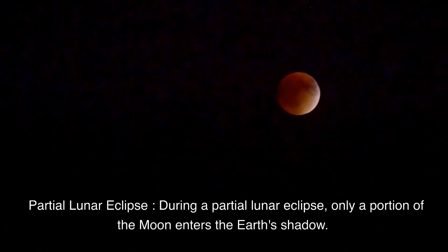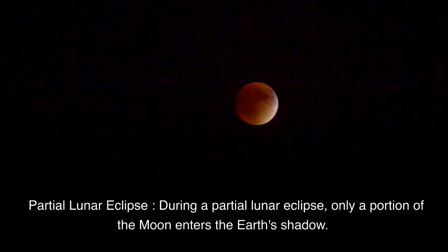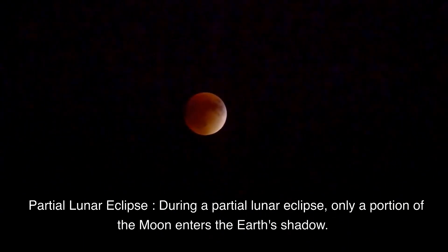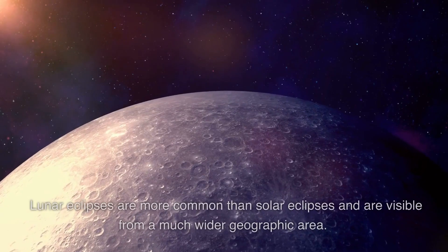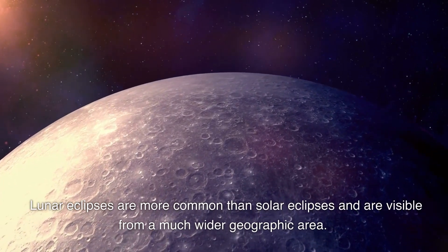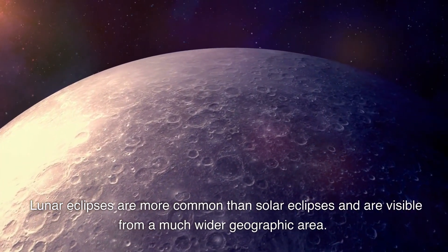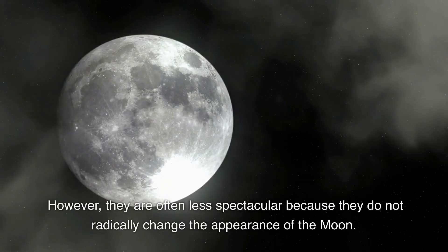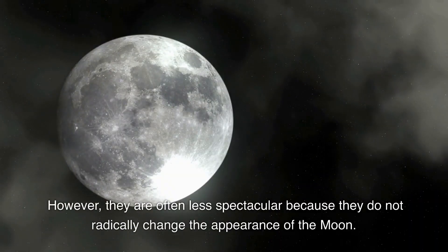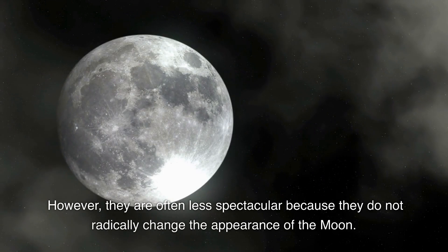Partial lunar eclipse. During a partial lunar eclipse, only a portion of the moon enters the earth's shadow. Lunar eclipses are more common than solar eclipses and are visible from a much wider geographic area. However, they are often less spectacular because they do not radically change the appearance of the moon.